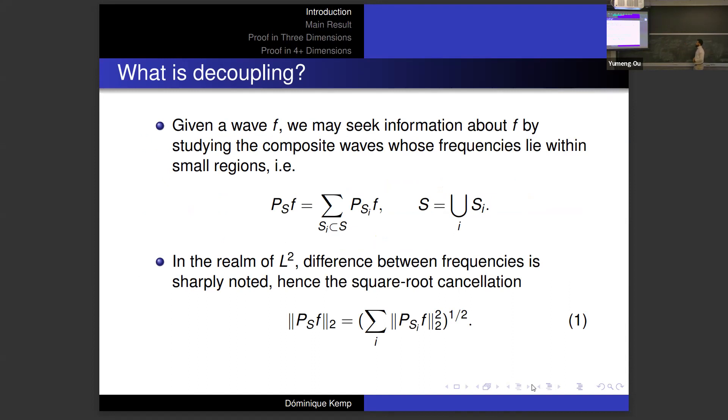Now let's discuss what is decoupling. Given some wave F or a function F that we are conceptualizing as a wave, we may want information about F by studying the composite waves whose frequencies lie within certain regions. To emphasize that the Fourier support of F is in a set S, we're using the Fourier projection notation here. On the frequency side of things, we break up our set S into smaller sets S_i. This is reflected on the left by decomposition of our P_S F function. Now if we are only looking at the L^2 norm of P_S F by Plancherel, we of course have the usual square root cancellation.